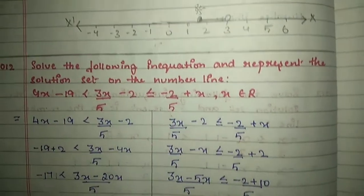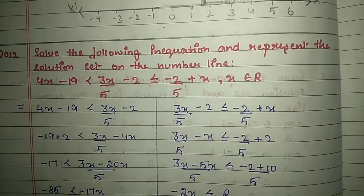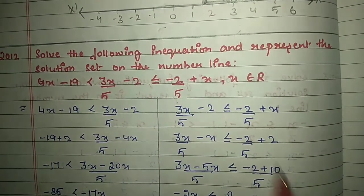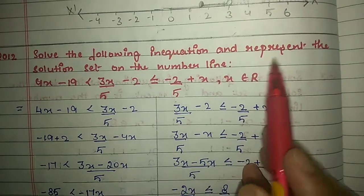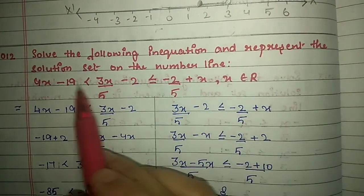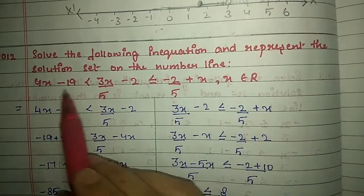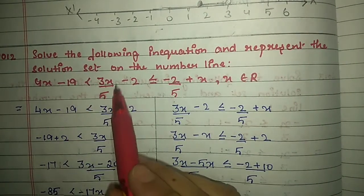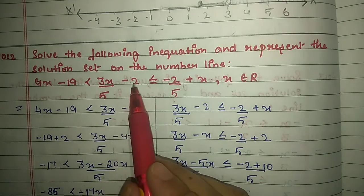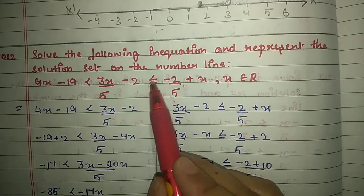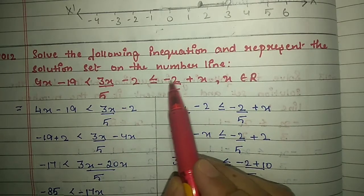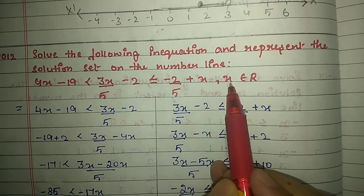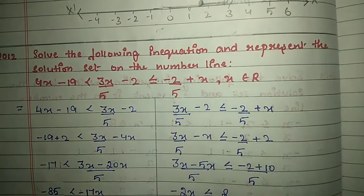Next question from 2012: solve the following inequation and represent the solution set on the number line. 4x minus 19 < 3x/5 minus 2 ≤ minus 2/5 + x, where x belongs to R.